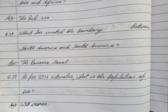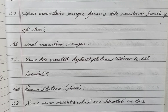Question 29: As per 2014 estimates, what is the population of Asia? Answer: 430 crores. Question 30: Which mountain range forms the western boundary of Asia? Answer: Ural Mountain Ranges.